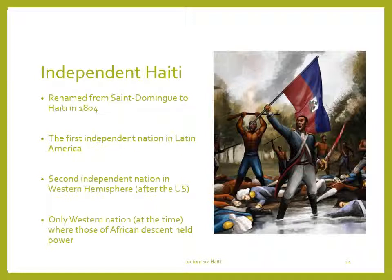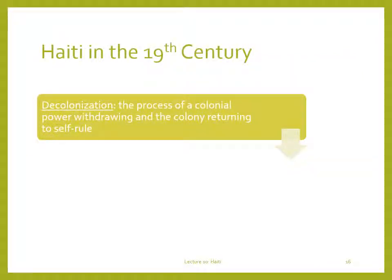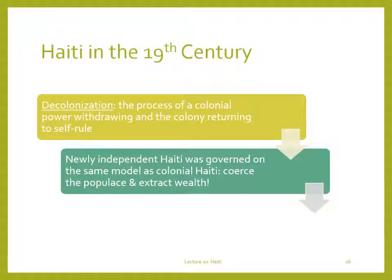Unfortunately, its post-colonial history was, by most standards, an unmitigated disaster. Colonial societies are usually ethnically quite diverse. Haitian culture combined African, French, Spanish, and some remaining Taino influences. The governments of colonies are structured on resource extraction and coercion of the native populace. France ruled Saint-Domingue for its own benefit, not the benefit of the Haitian people, resulting in a local economic base that was depleted, with little infrastructure to produce goods for its own use, and a lot of simmering resentment. Decolonization was not planned with any eye toward the long-term prosperity of Haiti. One day, more or less, France was gone and Haiti was independent, and its new ruling class still sought to rule with the same strategies learned under colonial rule—coercion and exploitation.